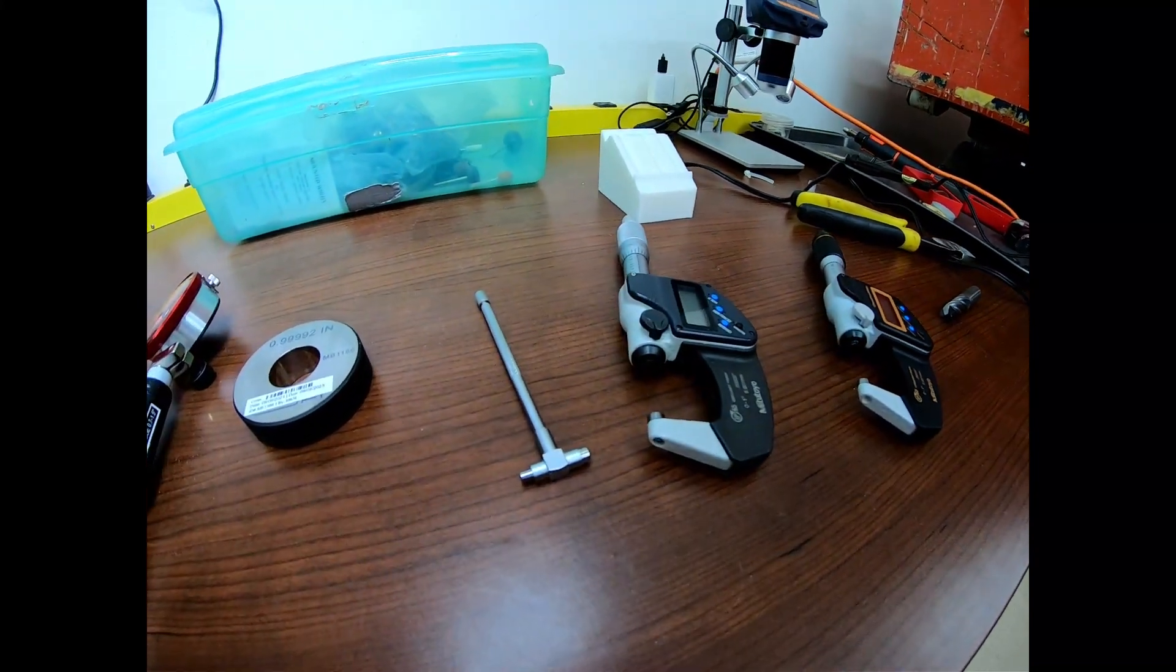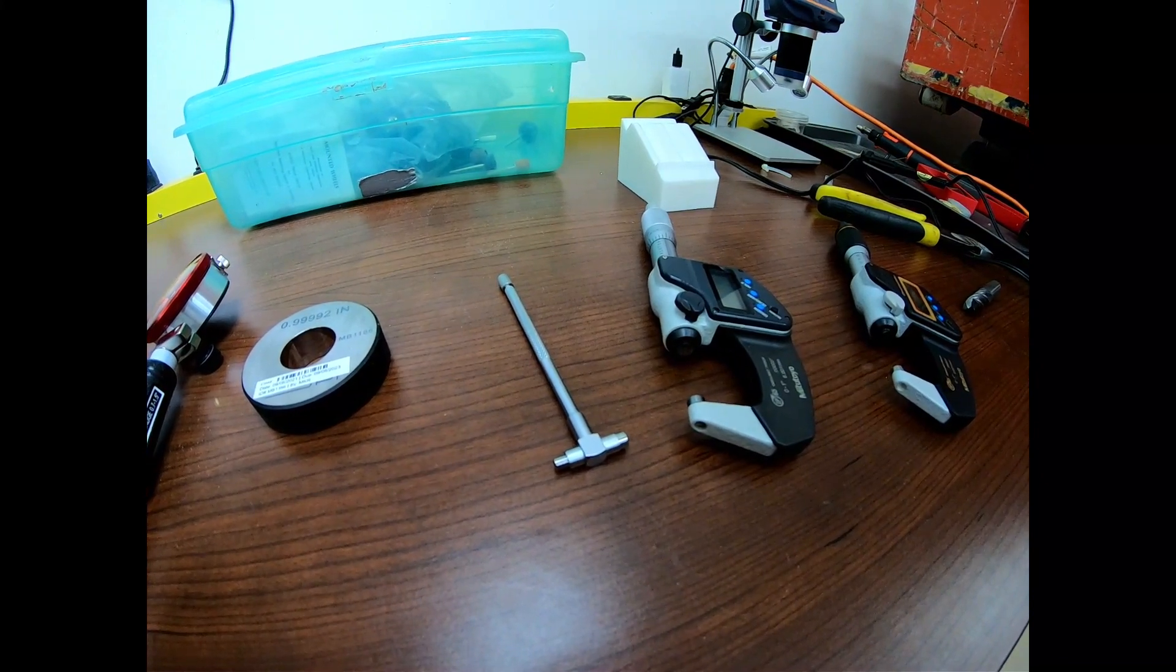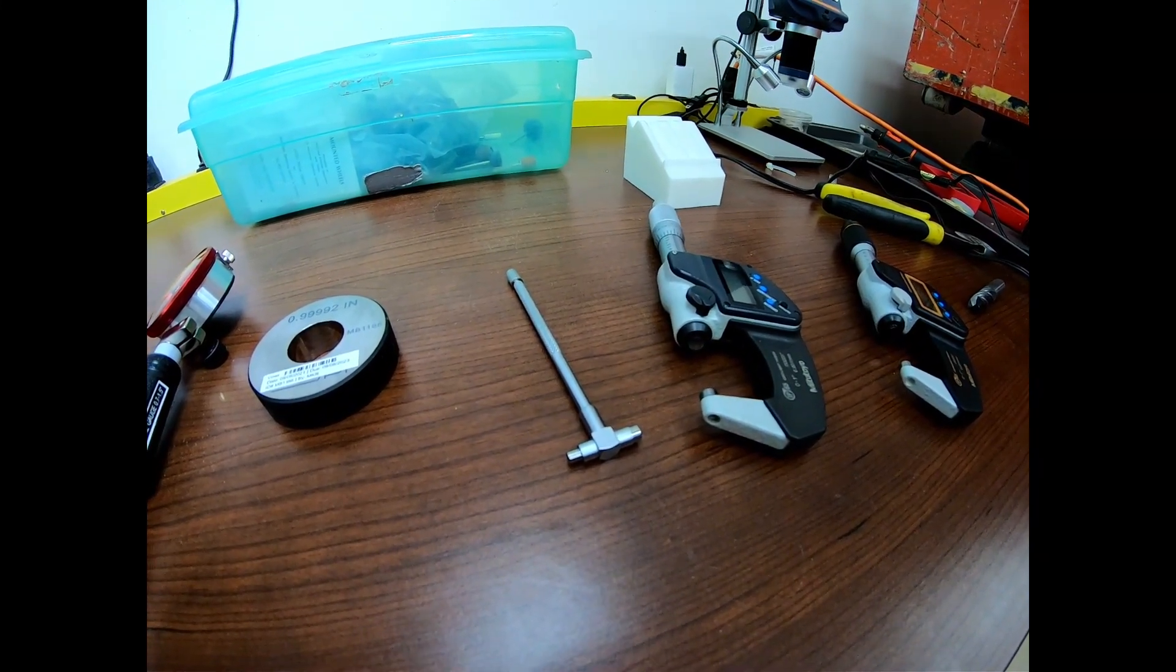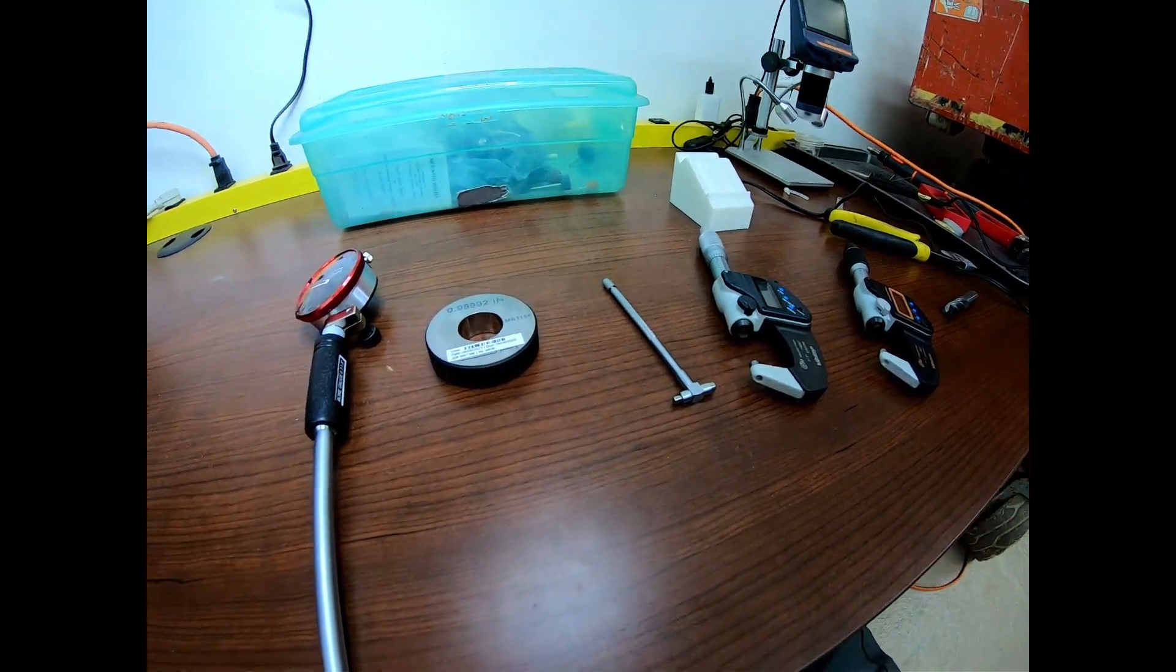The gauge pin reading always comes out two tenths bigger, roughly. And I've done this, I can't tell you how many times. So here's the anomaly I need help with.